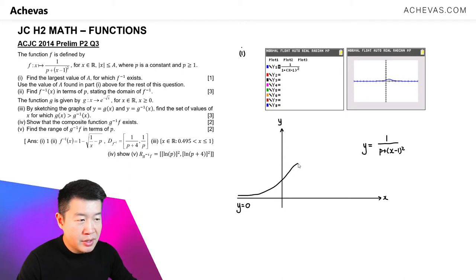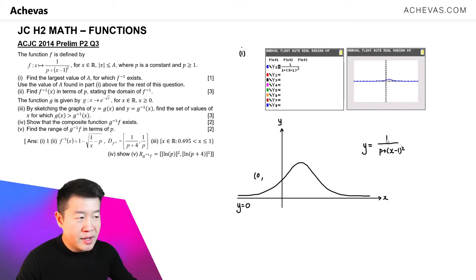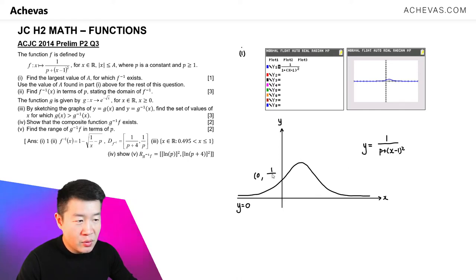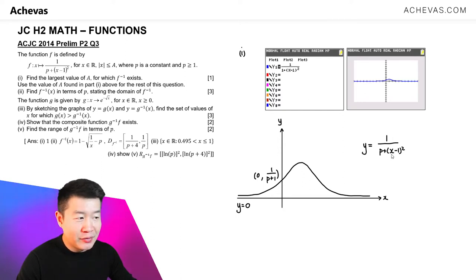The graph has a maximum point, and it comes back down towards the horizontal asymptote. So I have a graph that is something like this. When x is equal to 0, that will give me the y-intercept. When x is equal to 0, y is equal to 1 over p plus (0 minus 1) squared, so it's 1 over p plus 1.